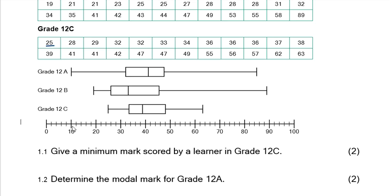You could also read it off the 12c box and whisker plot. Remember: that's the minimum, that's Q1, that's Q2, that's Q3, and that is the maximum. For 12c, if you go down the minimum line vertically, the lines are in increments of 2 — so 22, 24, and between 24 and 26 we've got 25, which is the minimum value for 12c.